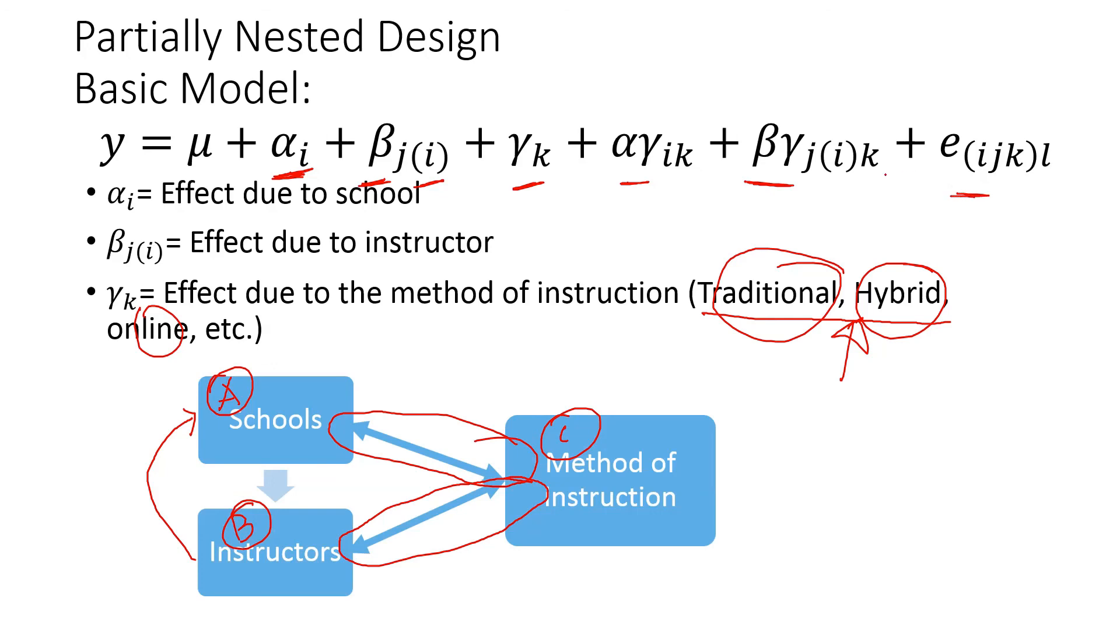Now, if one of these factors is random—for example, instructors are typically random—so if this is random, this is fixed, and this is fixed, then you know how to develop that expected mean square and how to find the correct F statistics. That's it about partially nested, nested, and hierarchical design.